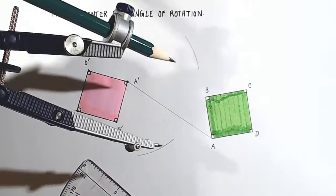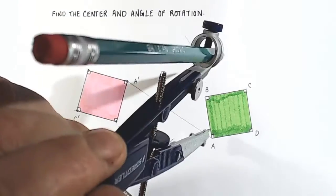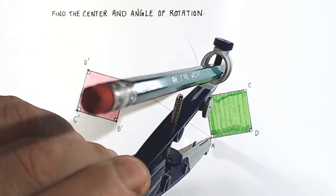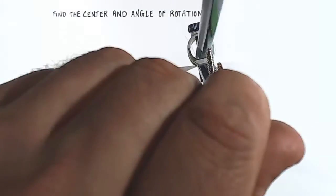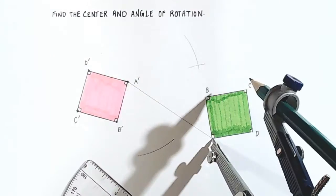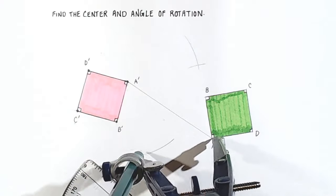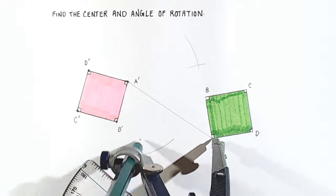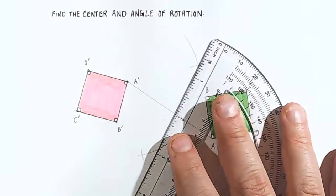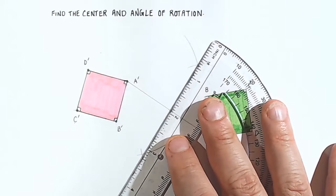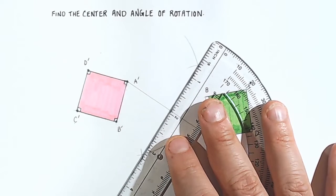Okay, and without changing the radius of our compass, we're going to come put our point here on point A. And we're going to draw overlapping arcs, so one there and then one down here. And if we connect those two overlapping arcs, we will have constructed an exact perpendicular bisector to the segment that we just drew, A, A prime.